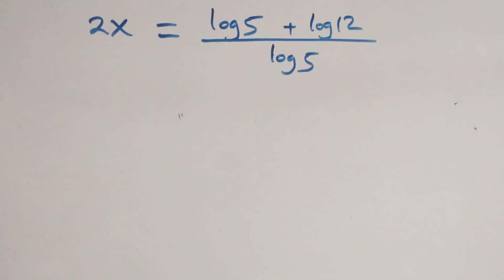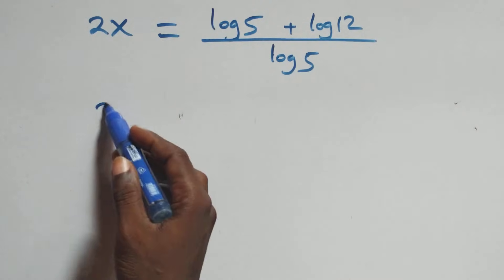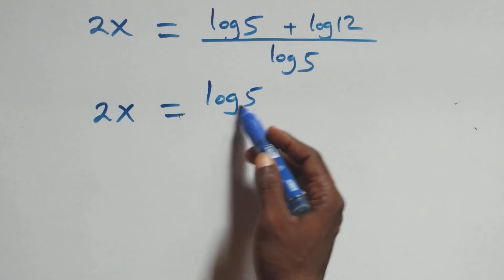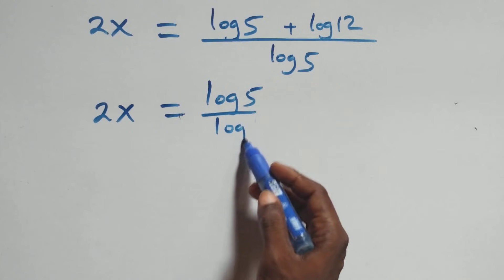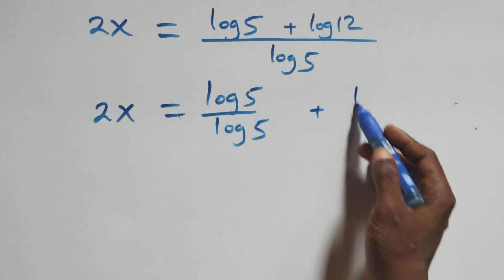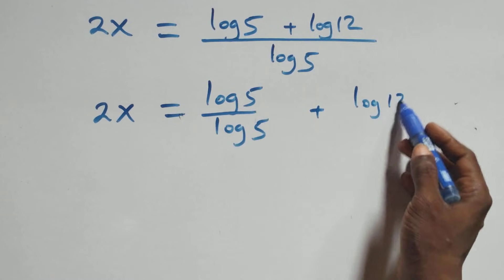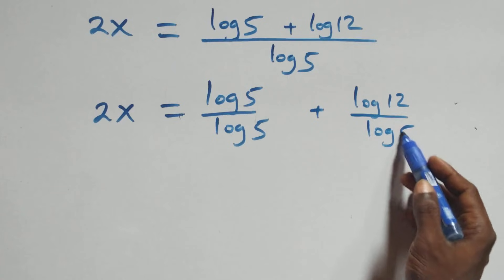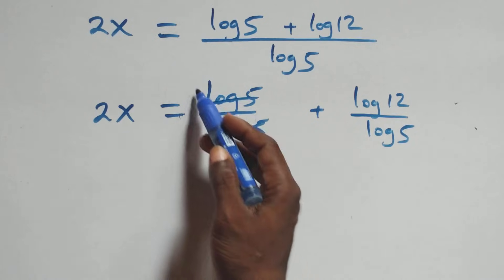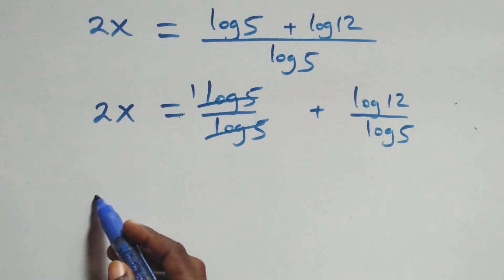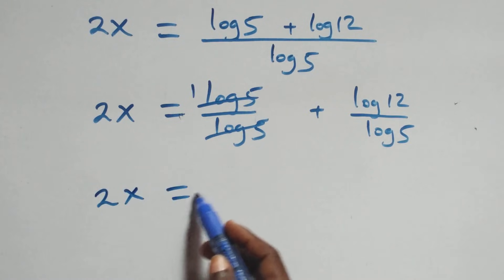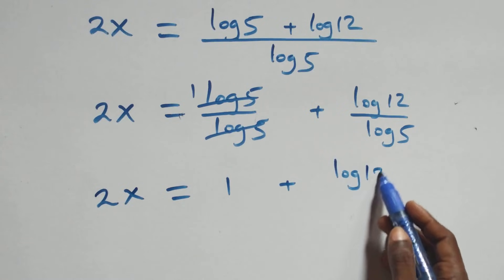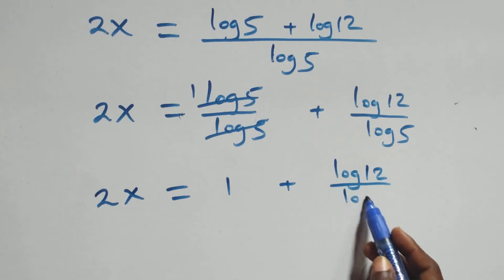Then, next step here: we separate this into two fractions. We have 2x equals to log 5 over log 5 plus log 12 over log 5. Log 5 cancels each other — we have 1 left here — which implies 2x equals to 1 plus log 12 over log 5.